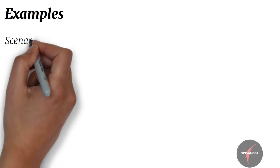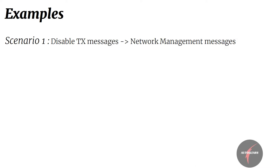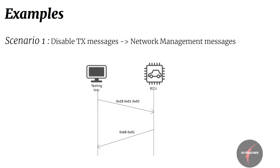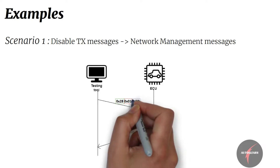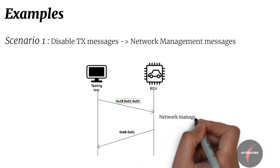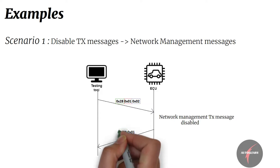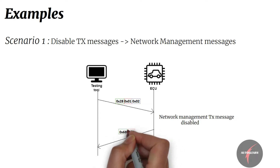Now let's look into some examples. Consider a situation where the client has to disable TX — in particular, the network management message. The request shall be sent as follows: communication control request SID set to 0x28, control type set to 1 (enable RX and disable TX), and communication type set to 2 (network management). The network management messages shall be disabled. The response shall be: communication control response SID set to 0x68 and control type set to 1.